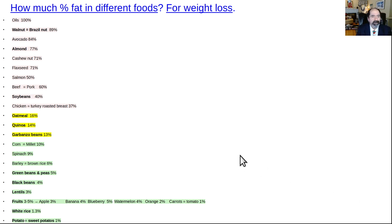So there's some surprises here. First of all, oil is a terrible food. It's 100% fat. But nuts are much fatter than people realize. Walnuts and Brazil nuts, about 89% fat.